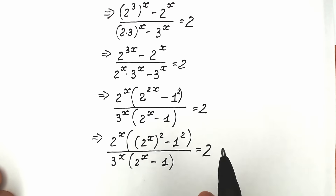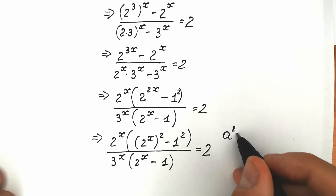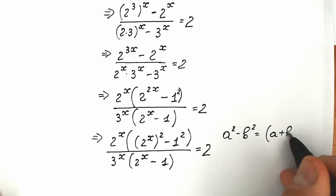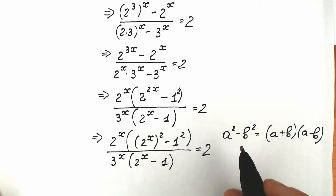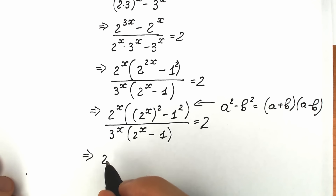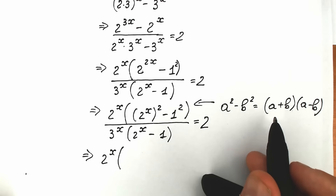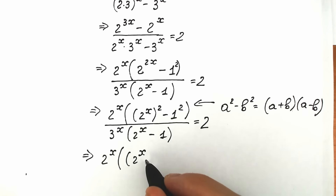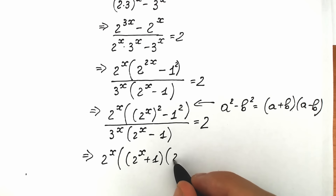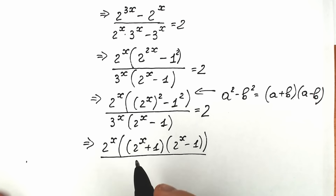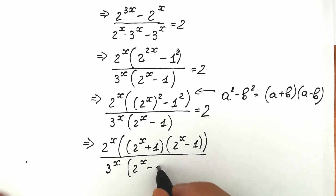This is the identity a² minus b², which equals (a + b)(a − b). Everyone should know this basic formula. Applying it here with a = 2^x and b = 1, we factor the bracket as (2^x + 1)(2^x − 1). So we have 2^x times (2^x + 1) times (2^x − 1), all over 3^x times (2^x − 1), equal to 2.